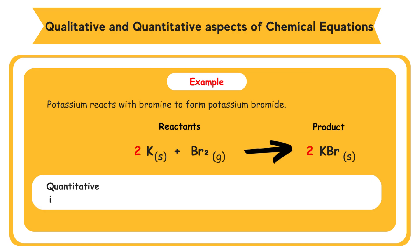Quantitative information. From the equation, we know that 2 moles of potassium will react with 1 mole of bromine gas to produce 2 moles of potassium bromide. So every 2 K atoms will react with 1 Br2 molecule to produce 2 units of KBr.